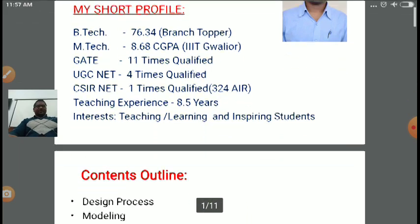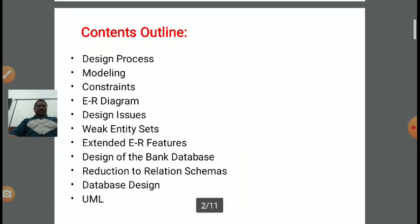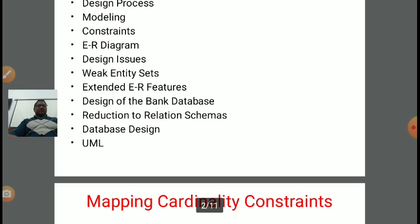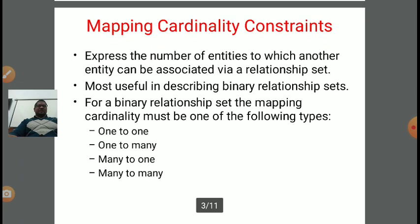Now in today's lecture, we are starting about the design process of a database, modeling, various types of constraints which we need to satisfy while designing a database, then the main tool of designing a relation — the ER diagram — then some design issues, weak entity set, extended ER features, and so on.